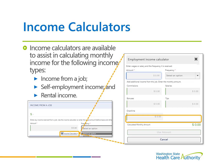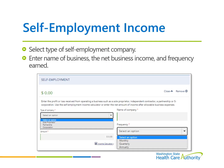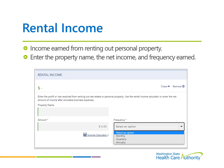Each calculator type provides different field options used to calculate gross amounts. For those with self-employment income, indicate the type of company — whether it is a sole proprietor, partnership, or corporation — then enter the company name, the net business income, and frequency the income is earned. For self-employment, the net business income can be reported as a positive or negative number to indicate a business profit or loss. Rental income is income earned from renting out personal property. Add the property name, the net amount, and how often the rental income is received.